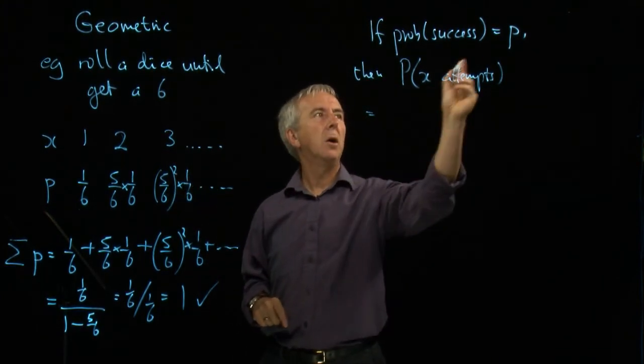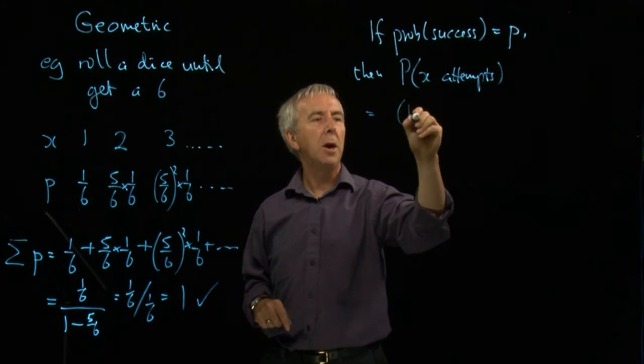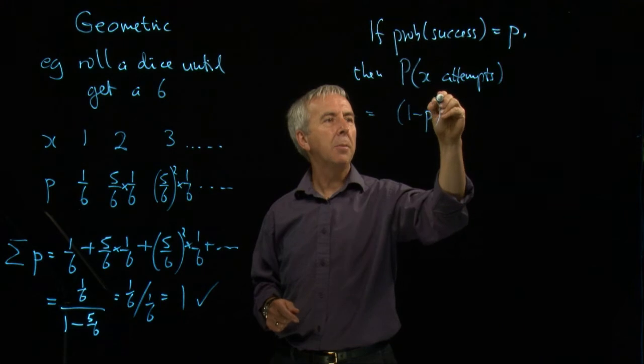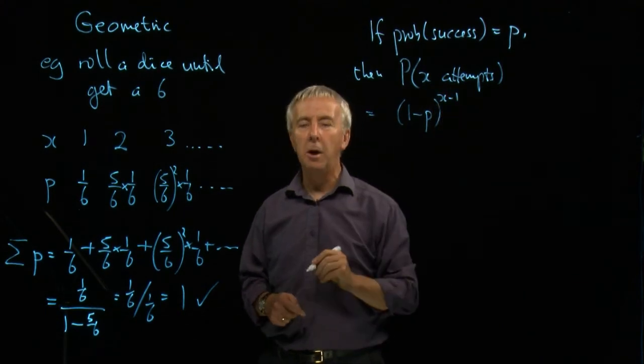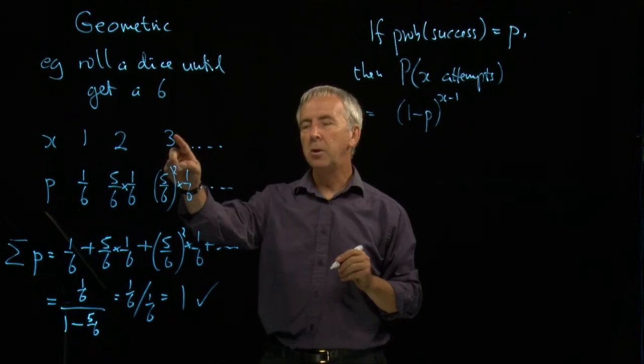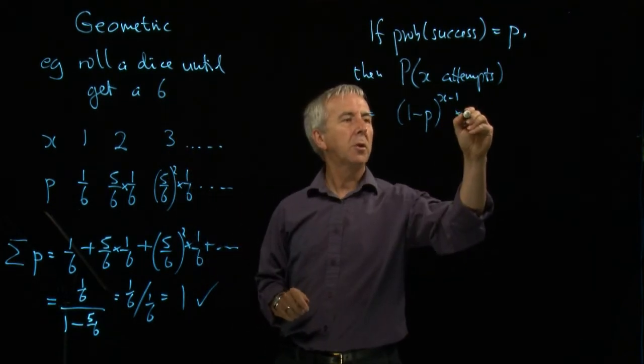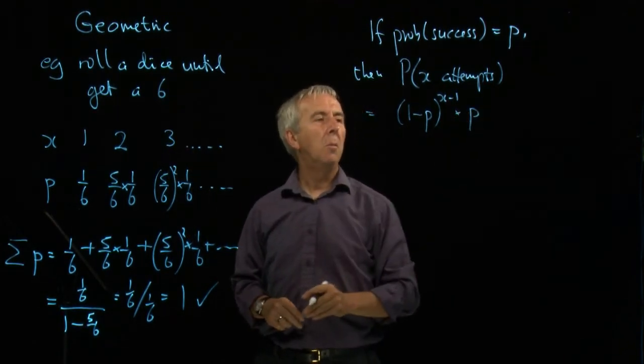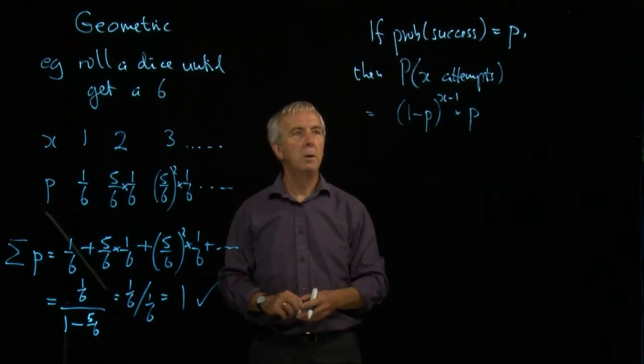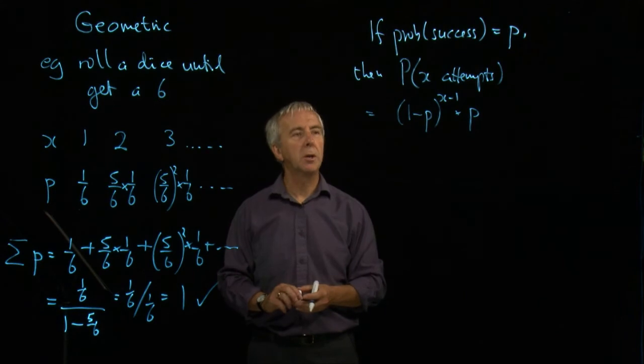So I want a fail, which has got probability of one minus p. I want that to happen x minus one times, so five-sixths squared when x is three, and then I want to get a success on my xth attempt. So that's the formula for the geometric distribution.